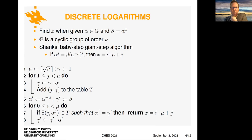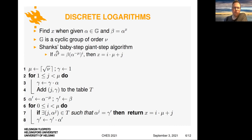A discrete logarithm is the problem of finding x when given alpha and beta in some cyclic group, where beta is alpha to the x. A famous way to solve this problem is Shank's baby step giant step algorithm. Once a match is found where some power of alpha equals the right-hand side, then we know what x is. The algorithm splits into two phases: the baby step phase, which computes powers of alpha and stores them in a table, and the giant step phase where we try to find the matches.